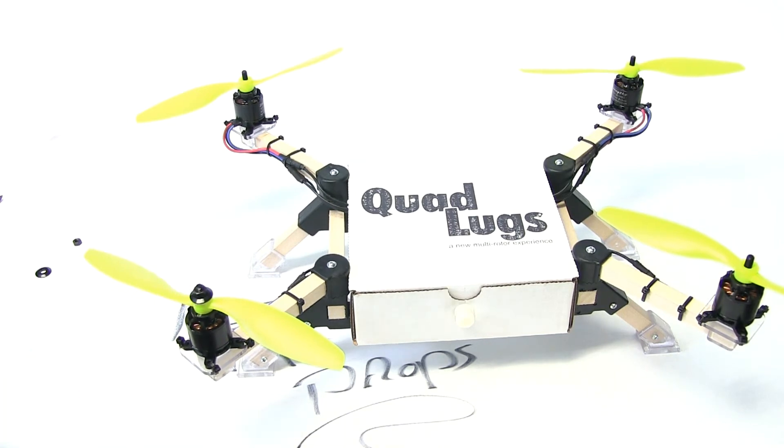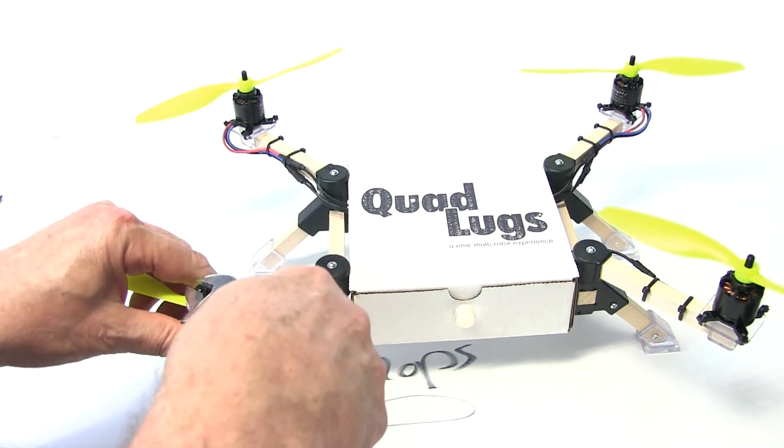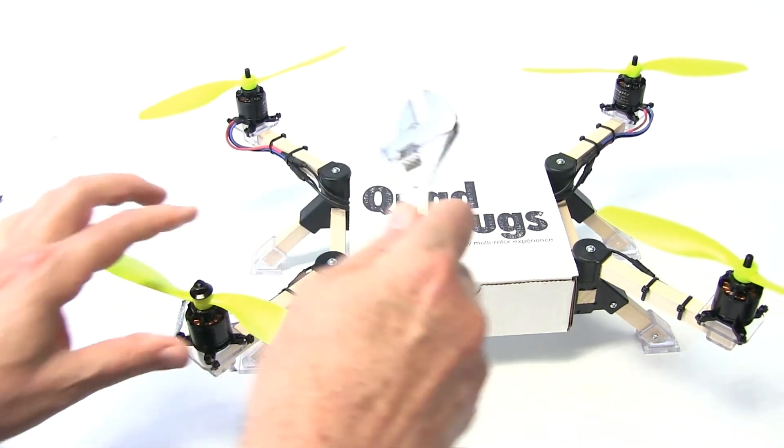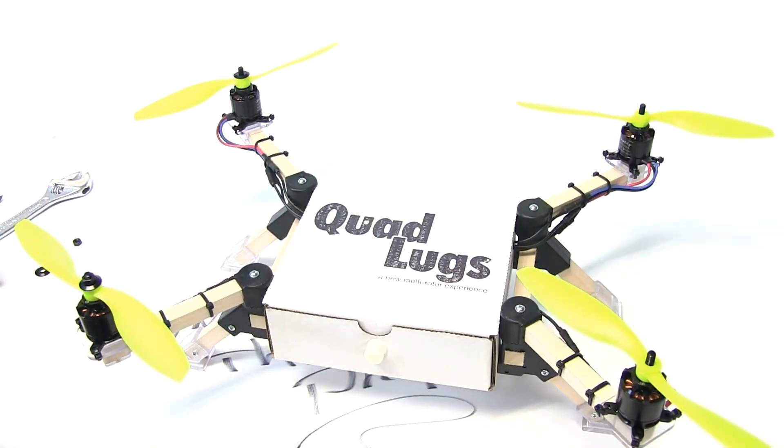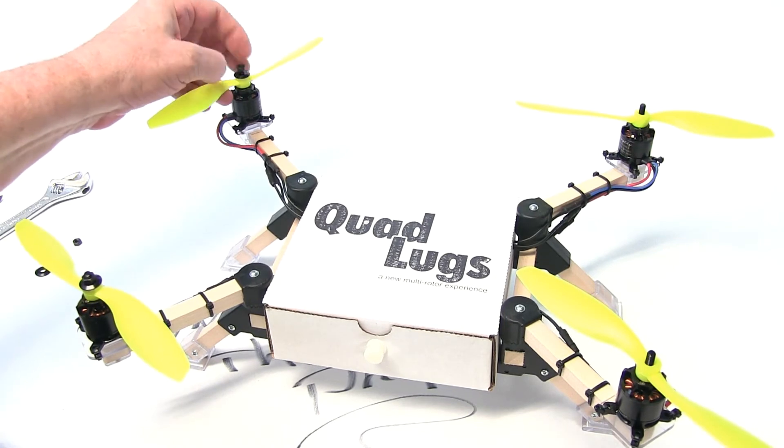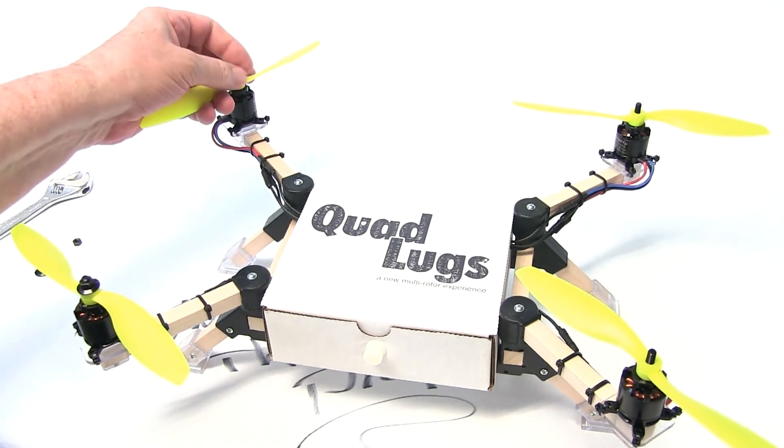I would check this every flight, at least every other flight, but it's really easy. When you change the battery and you're going to go flying again, just double check it. It just takes a second to check the prop before you plug in the battery again.